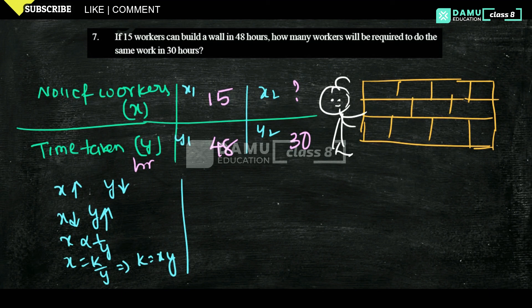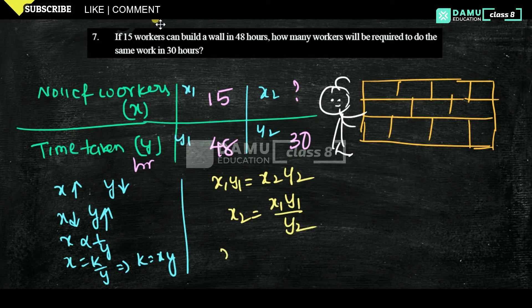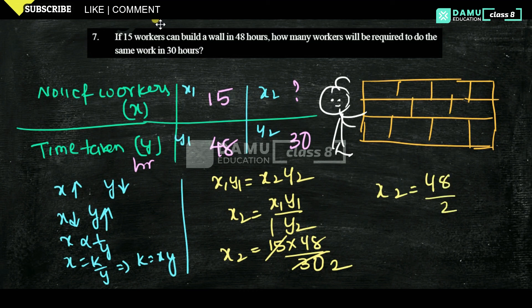We can write the formula as X1 × Y1 = X2 × Y2, so X2 = X1 × Y1 / Y2. X2 = 15 × 48 / 30. Simplifying: 15 / 30 = 1/2, so X2 = 48 / 2 = 24.